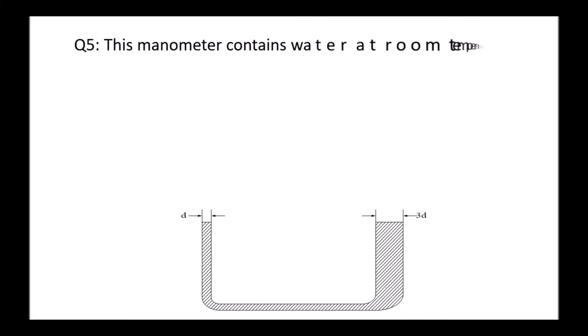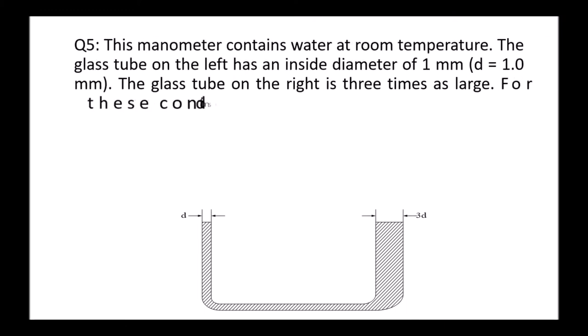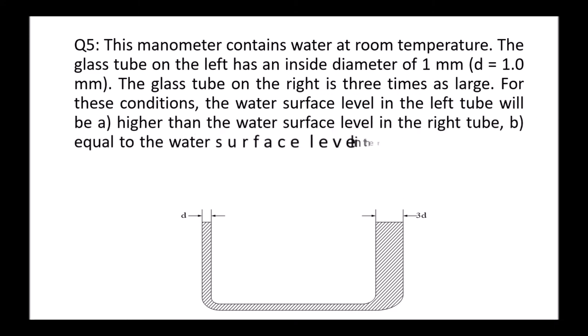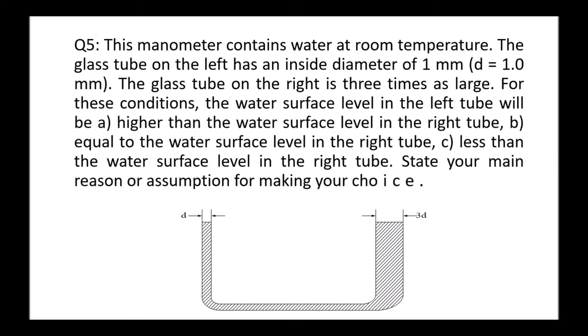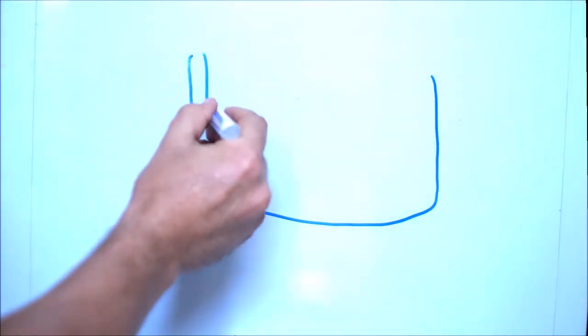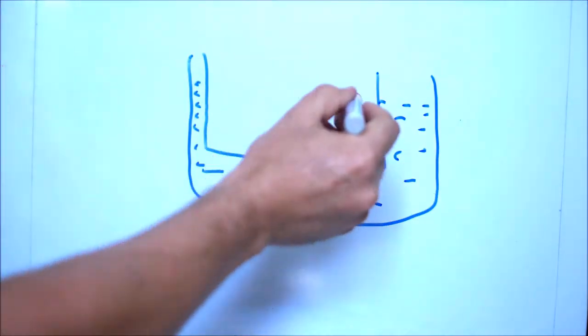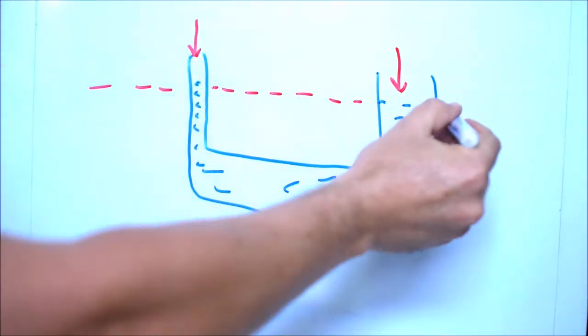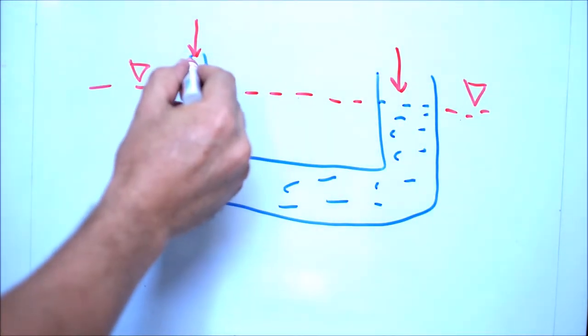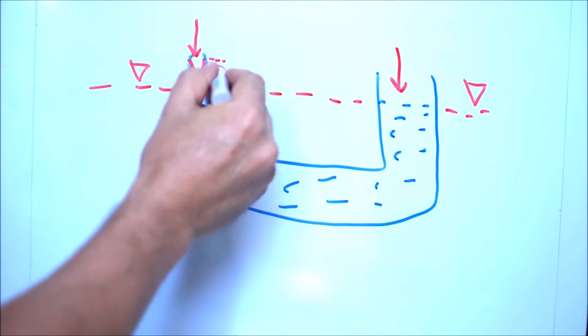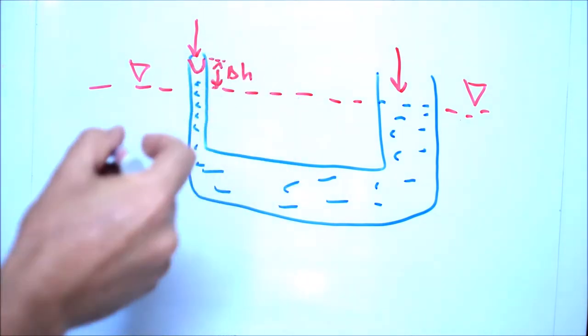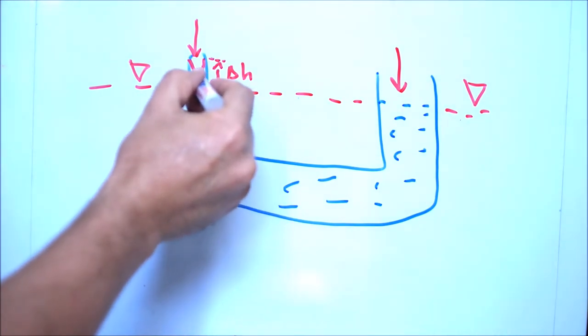Question five: we have a U-tube manometer with different diameters. The right side has a diameter three times as large as the left side, which is 1 mm. The question is which surface would be higher. In general, both surfaces should have the same level since atmospheric pressure is applied to both sides. But since we have a capillary tube, the water-glass reaction has an adhesive effect, so water will climb in the capillary tube generating additional height delta H. With mercury, the opposite occurs - mercury dips down with negative delta H.